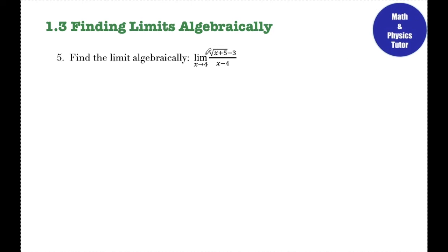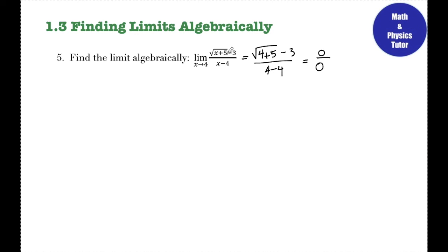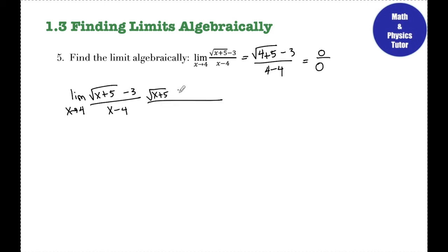Number 5: the limit as x approaches 4 of (√(x + 5) − 3) over (x − 4). First, I plug in 4 for x. In the numerator: √(4 + 5) − 3 = √9 − 3 = 3 − 3 = 0. In the denominator: 4 − 4 = 0. This is an indeterminate form. Whenever a radical is giving an indeterminate form, I'm going to multiply by the conjugate of the radical piece — that's (√(x + 5) + 3) on both the top and the bottom.